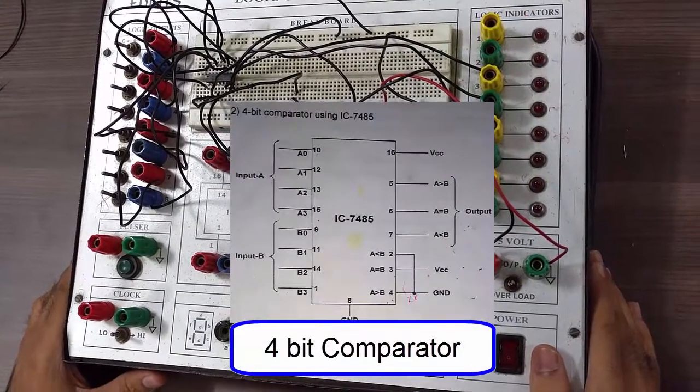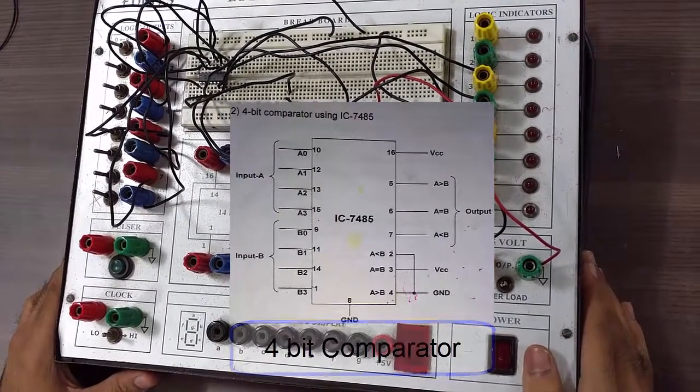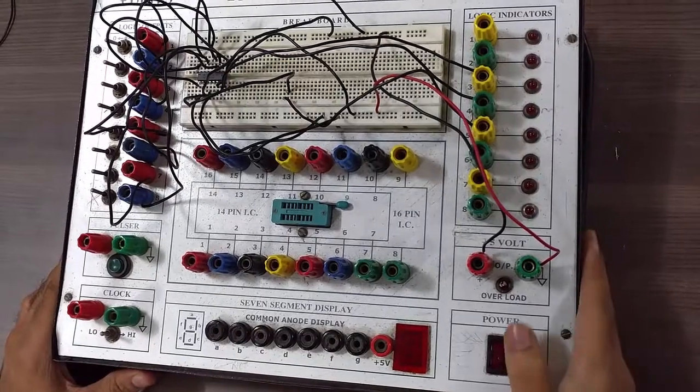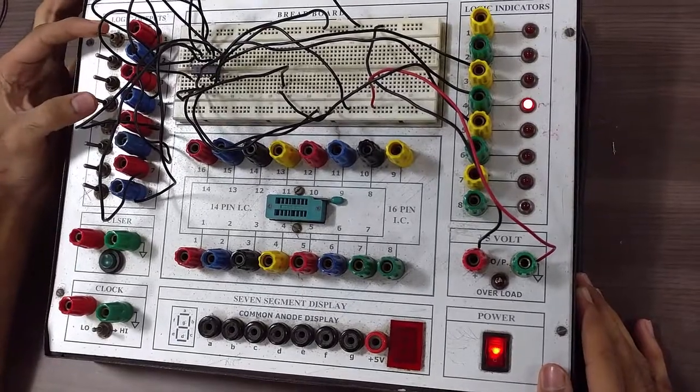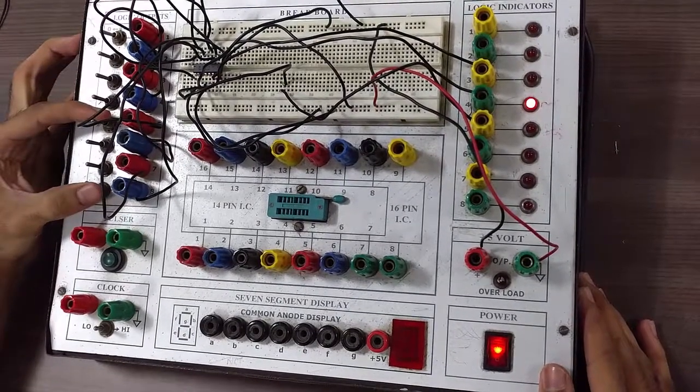Okay, so now we have made the connections for 4-bit comparator using IC7485 as we have discussed earlier. So now let's verify the output. As you can see, all these 4 inputs, A3 to A0 and B3 to B0, are 0.